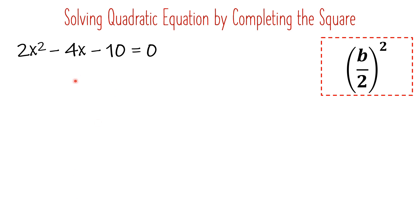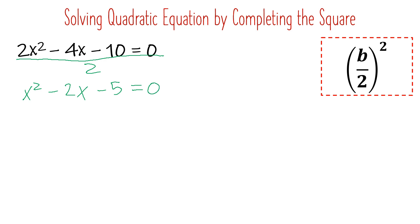Let's try the second example: 2x² − 4x − 10 = 0. Each term can be divided by 2 to simplify. So we get x² − 2x − 5 = 0. Now transpose the constant: x² − 2x = 5. We apply the formula (b/2)² to find what to add. Our b is −2, so (−2/2)² = (−1)² = 1. We add 1 on both sides to make it a perfect square trinomial.